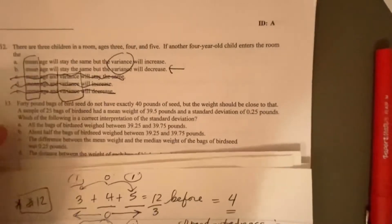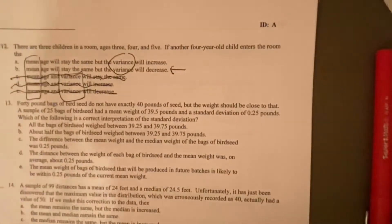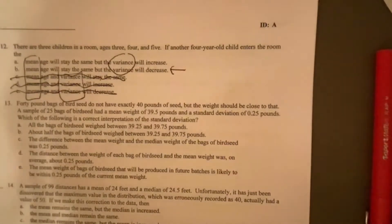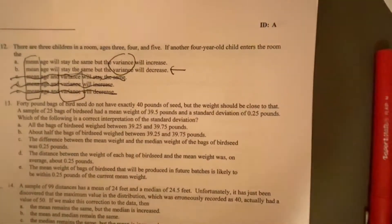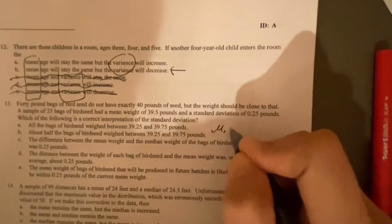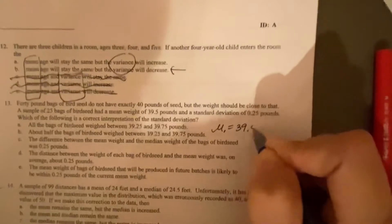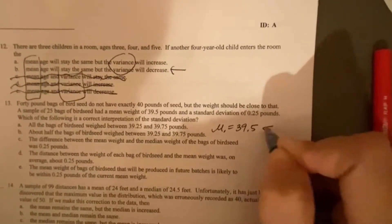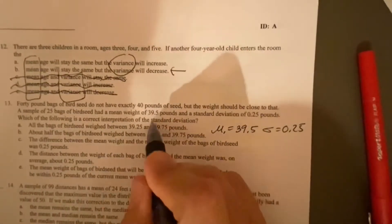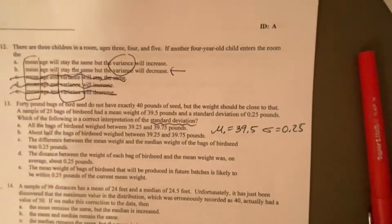Let's look at the question. 40 pound bag of birdseed do not have exactly 40 pounds of seed. The weight should be close to that. A sample of 25 bags of birdseed had a mean weight of just under 40 pounds and a standard deviation of 0.25. So a mean of 39.5 and a standard deviation of 0.25. Which of the following is a correct interpretation of what standard deviation means?